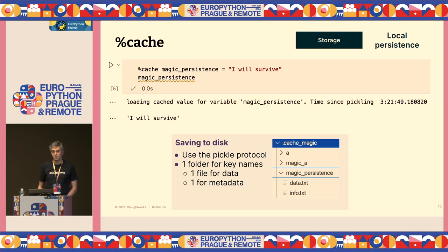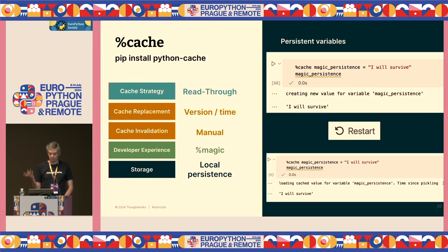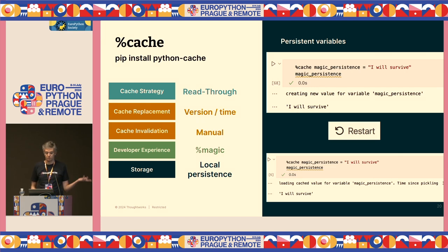What's actually happening under the hood? We're saving things to disk — two files: one describing how the key was generated, and one containing the data as a pickle file. Fairly straightforward. Putting it all together: it's a read-through strategy, cache replacement happens by version in time, cache invalidation is still manual — and sometimes you have to remove the files yourself. Storage is more persistent this time.